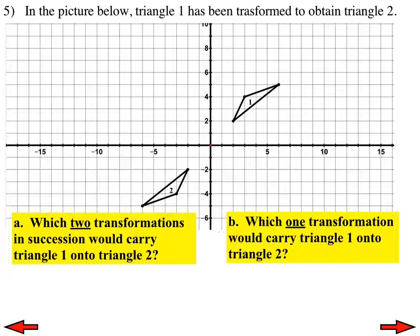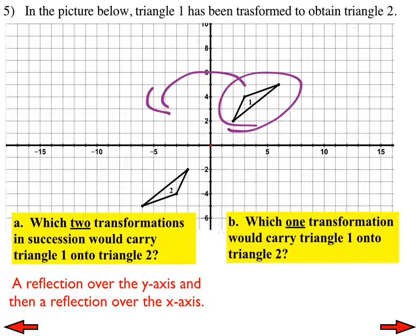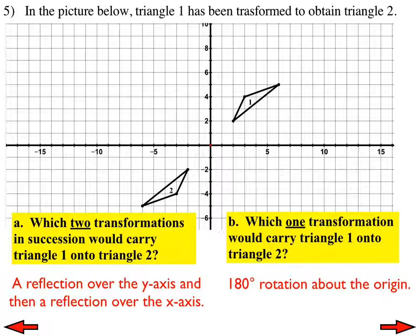Number 5 has two parts using triangles 1 and 2. Part A: which two transformations in succession would carry triangle 1 onto triangle 2? One way is a reflection over the y-axis, followed by a reflection over the x-axis. Part B: which one transformation would carry triangle 1 onto triangle 2? That would be a 180-degree rotation about the origin.